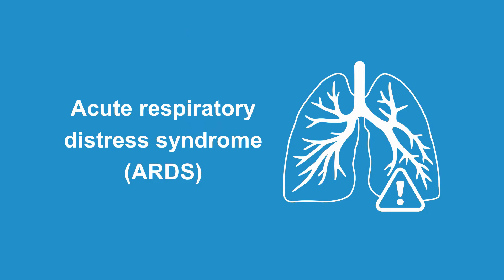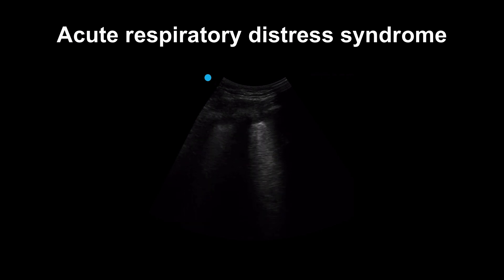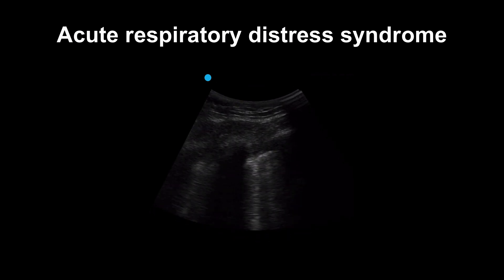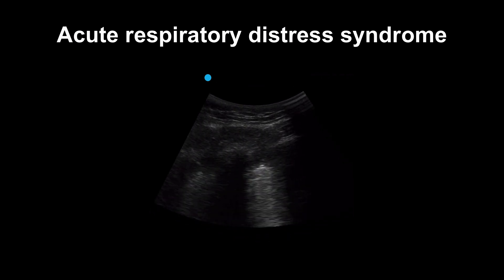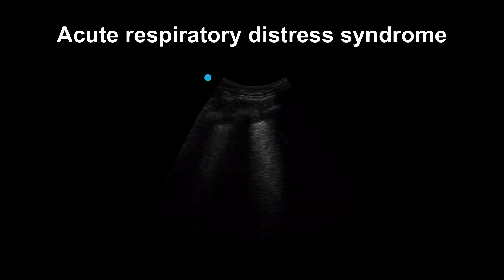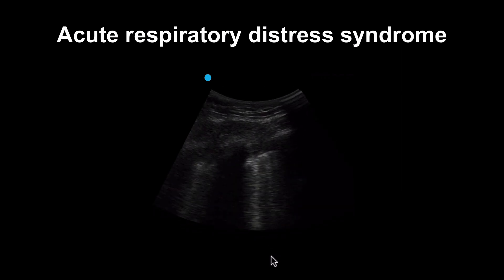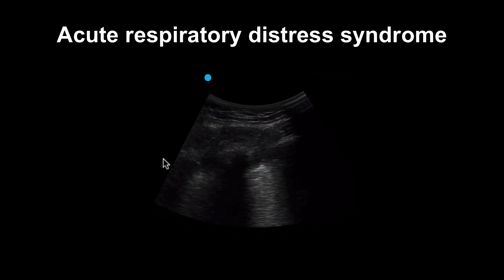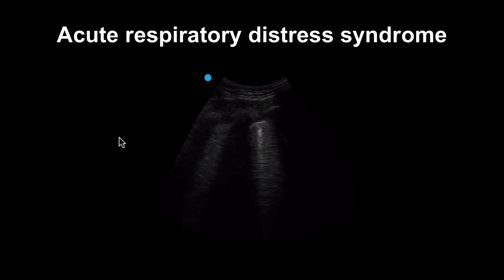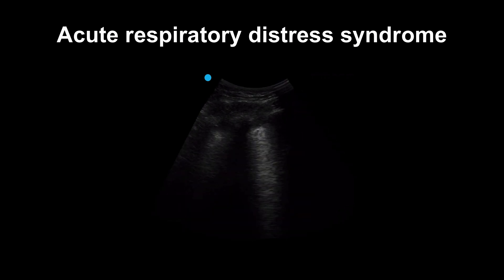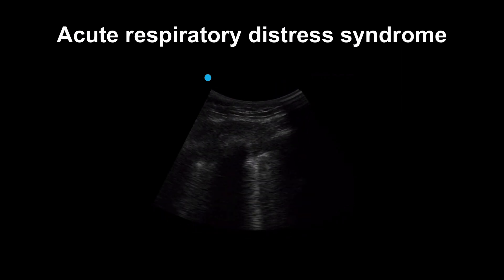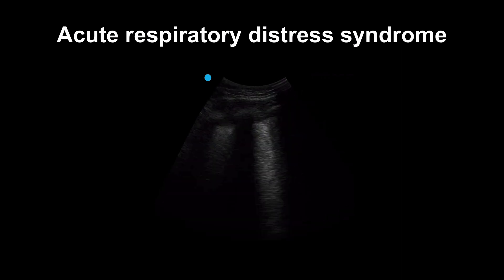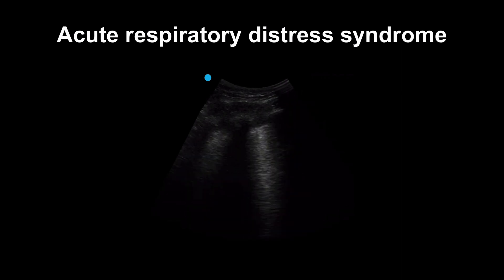What about ARDS? This is a clip obtained from a patient who had ARDS. Notice that we can see a B-line profile — there are a large number of vertical artifacts extending off the pleura down to the bottom of the image. One feature of ARDS on lung ultrasound is diffuse B-lines, but that's also true of patients in pulmonary edema.